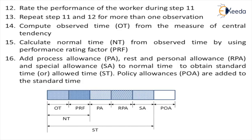So, the observed time multiplied by the performance rating factor gives you the normal time. Adding allowances such as process allowance and special allowances to the normal time gives you the standard time. Finally, the policy allowances are also added to the standard time.